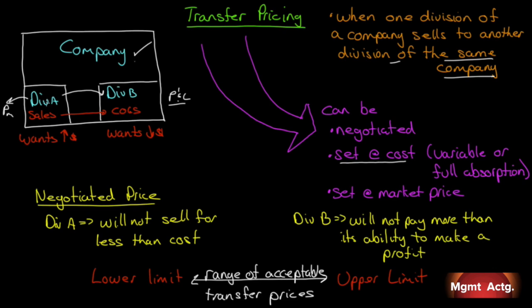The problem arises when Division A is selling into the marketplace but has unused capacity. Holding out for the market price from Division B would be suboptimal, because as long as it covers variable costs, the transfer makes sense given the idle capacity. Another problem occurs when Division A is not selling into the marketplace at all — there's no market signal, and finding a truly comparable product is difficult due to differences in quality or production process.